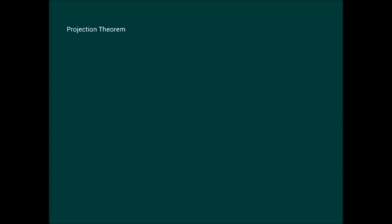To give you an idea of the projection theorem, I'll start by saying that if we have a vector u, then this vector can be split up into two vectors: the vector w1, which is along this bigger vector — let's call this a. So w1 is this vector, and a is the vector.